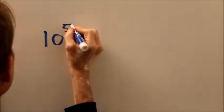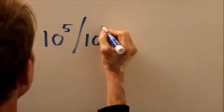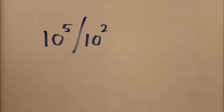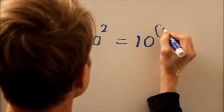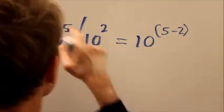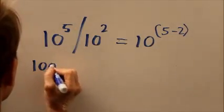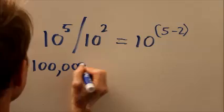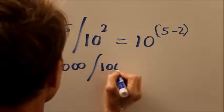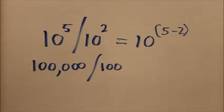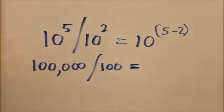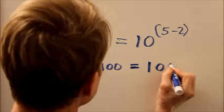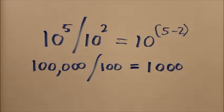10 to the 5th divided by 10 squared equals 10 to the 5 minus 2. Well, what's 10 to the 5th? 10 to the 5 minus 2 is 10 cubed or 1,000. Well, that works.